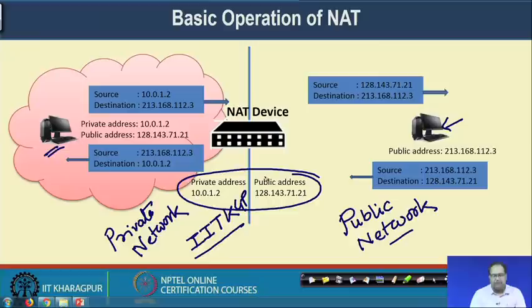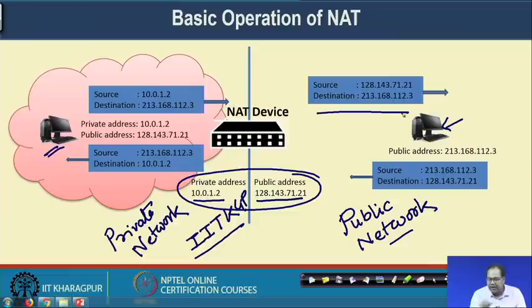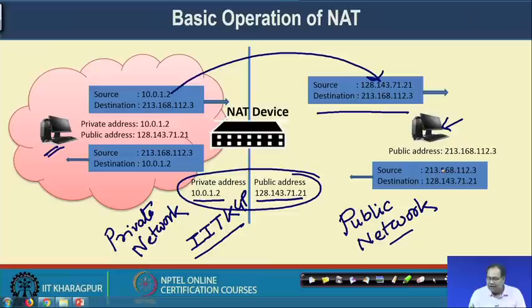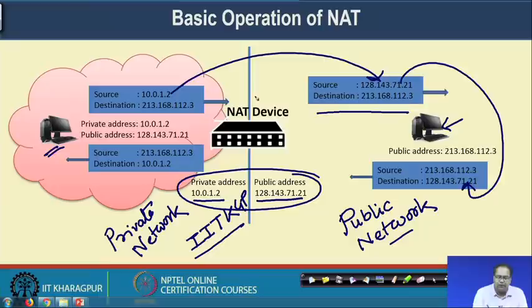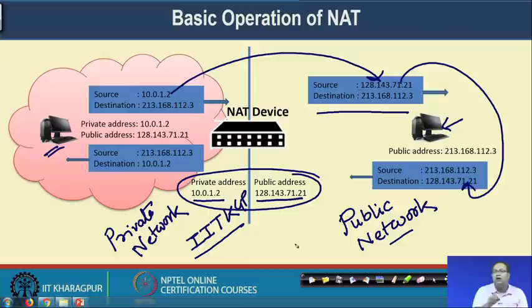Whenever the packet comes to the NAT device, the NAT device makes a mapping between the private address and the public address. This private address of 10.0.1.2 is mapped to one of the available public addresses, which is 128.143.71.21, and that public address is put into the packet going into the public network. The NAT device replaces the private IP with the public IP and sends the packet. The NAT device maintains a NAT table where it has recorded the mapping between the private address and the public address.